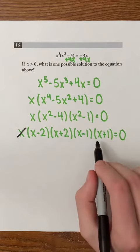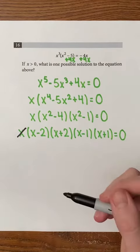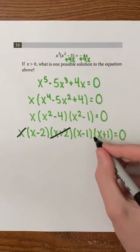We can also ignore x plus 2 and x plus 1 because they will result in negative solutions that are not greater than 0.